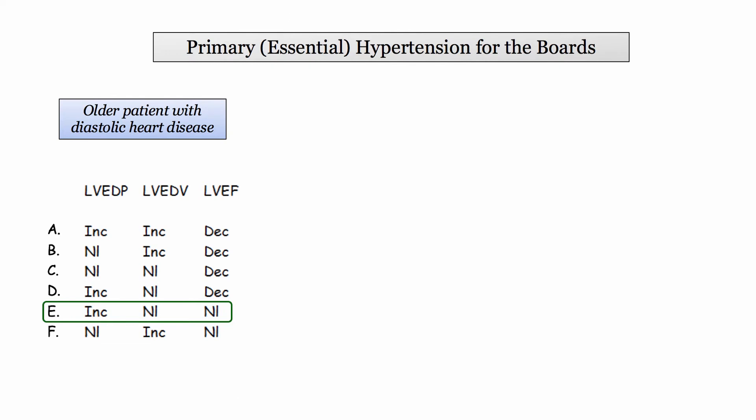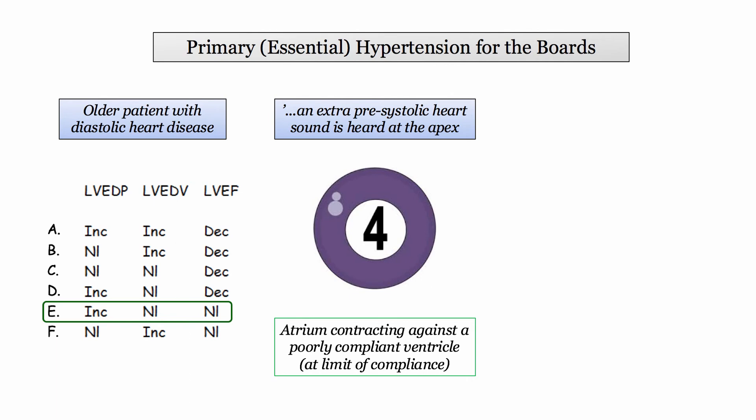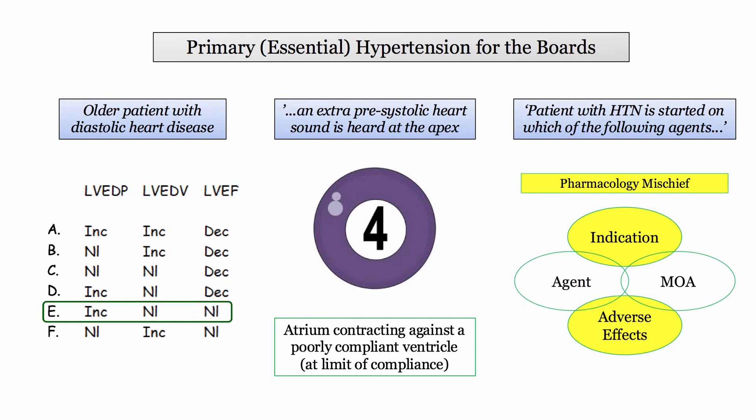Before departing, let's think about other settings where you are likely to encounter hypertension derivatives on the boards. The first example demonstrates the physiologic changes of diastolic dysfunction — these patients will be flagged as older hypertensives, and you'll need to appreciate the association between diastolic heart failure and longstanding hypertension, including the increased filling pressures required to maintain adequate cardiac output. A more straightforward derivative involves the hypertensive patient presenting with an extra pre-systolic heart sound heard best at the apex — the S4. You'll need to identify the physiologic basis for the S4 and its underlying association with hypertension.